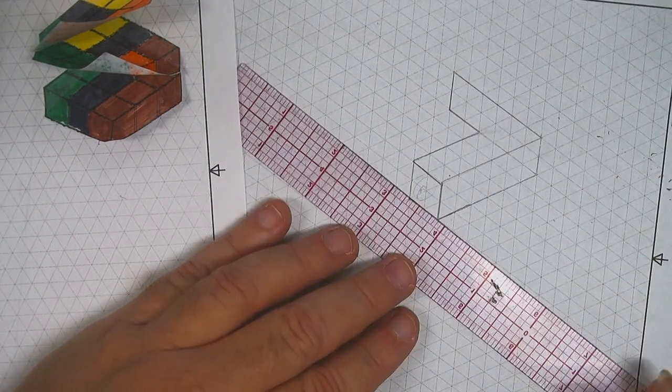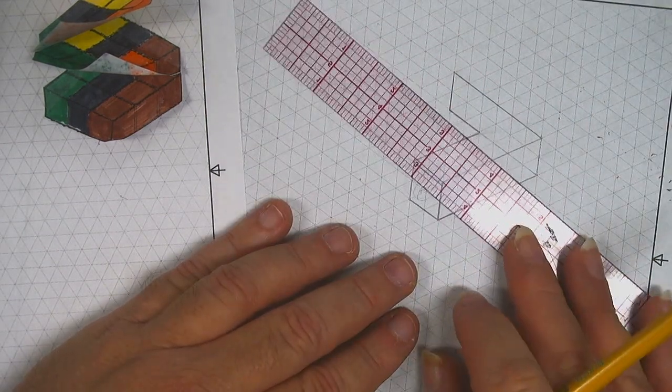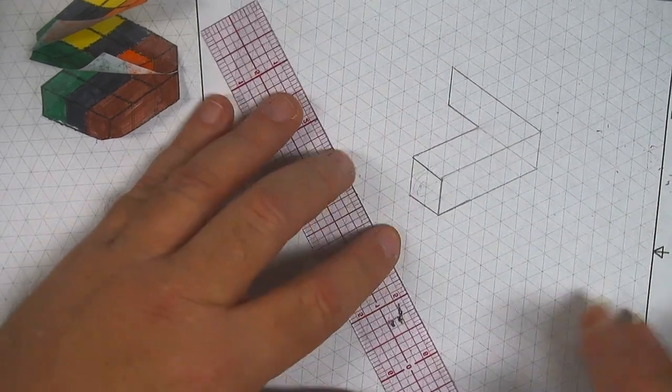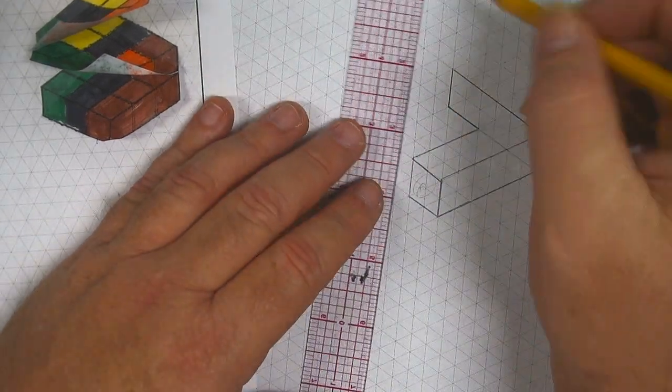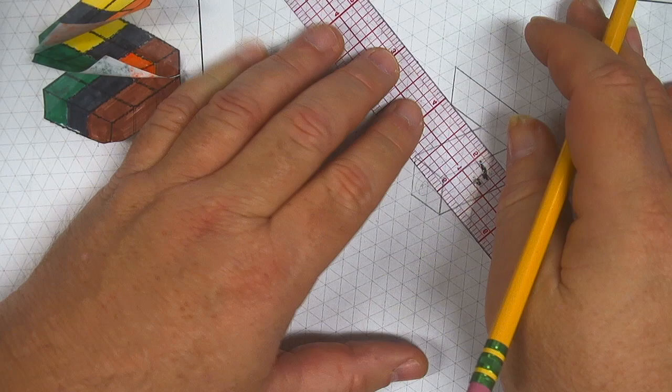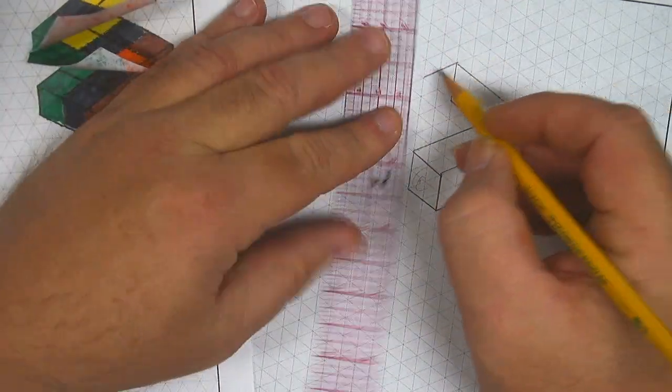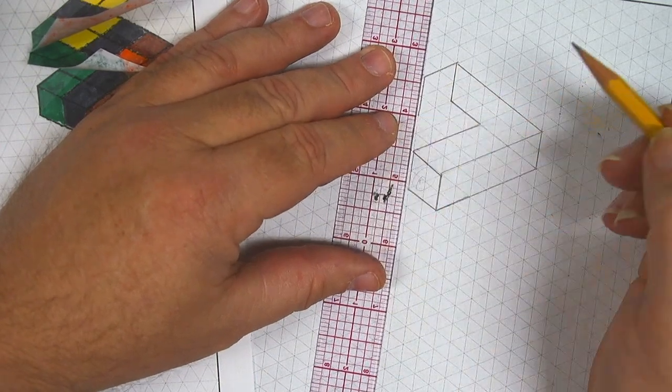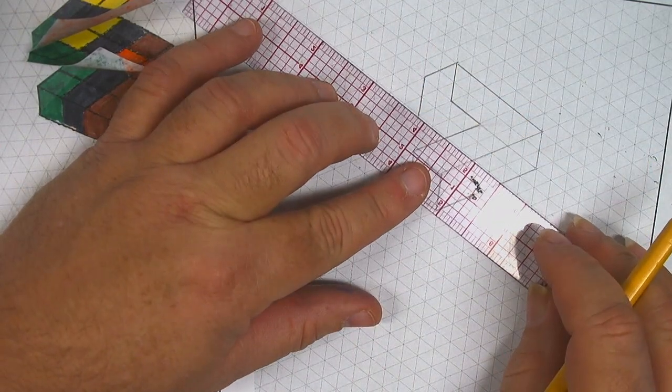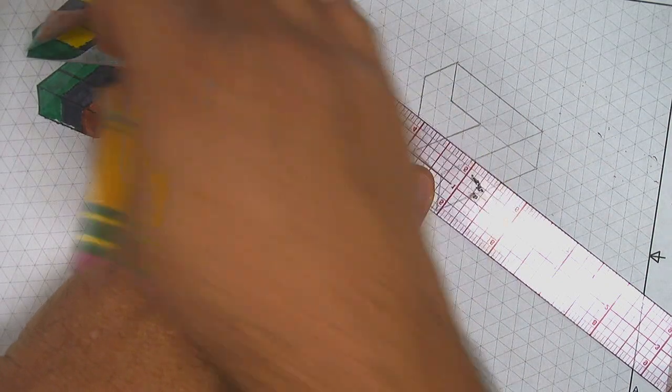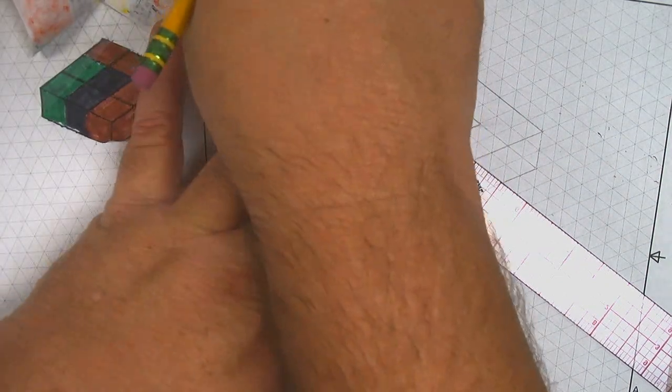So next we need the other side going up. And that cube is also going to be two units by two units. All right, and then that very bottom edge of that cube, and I'm getting kind of curly on my paper here.